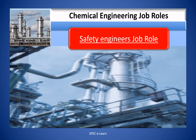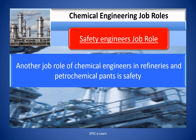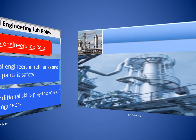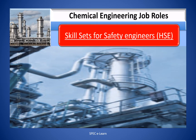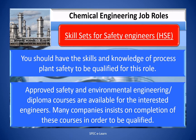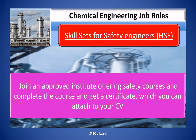Safety engineer job role. Another job role of chemical engineers in refineries and petrochemical plants is safety. Chemical engineers with additional skills play the role of safety engineers. You should have skills and knowledge of process plant safety to be qualified for this role. Approved safety and environmental engineering diploma courses are available. Many companies insist on completion of these courses, so joining an approved institute and obtaining a certificate is recommended, which you can attach to your CV.